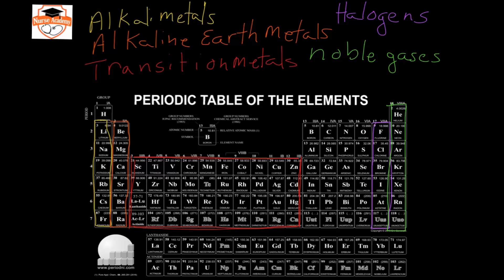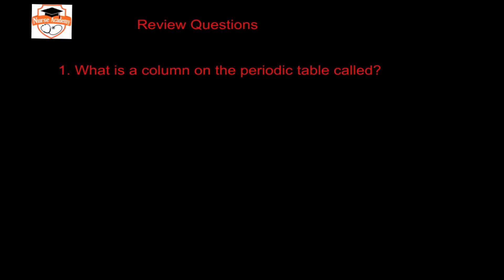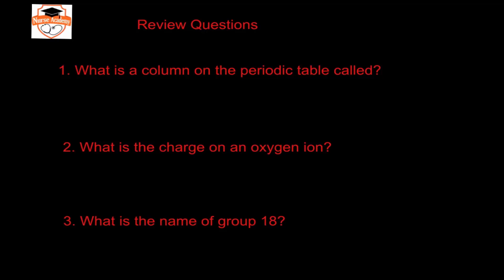Here are three review questions. Pause the video, think about the answers on your own, then hit play and we'll discuss. Question one: what is a column on the periodic table called? Question two: what is the charge on an oxygen ion? Question three: what is the name of group 18?